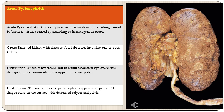Regarding the morphology of acute pyelonephritis: acute pyelonephritis is acute suppurative inflammation of the kidney caused by bacteria in most cases and viruses in some, reaching the kidney usually by the ascending route and at times by the hematogenous route. Grossly the kidneys will be enlarged with discrete focal abscesses involving one or both kidneys.